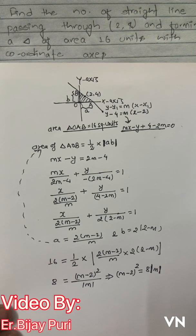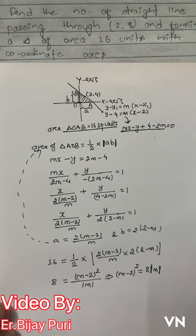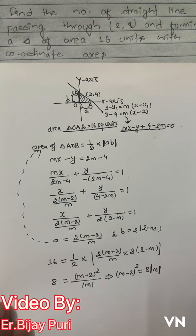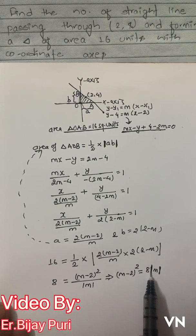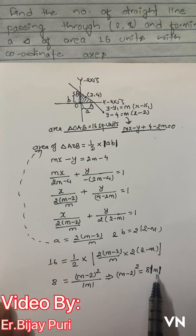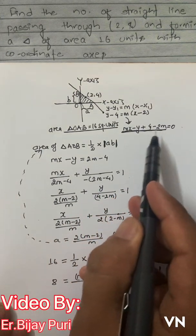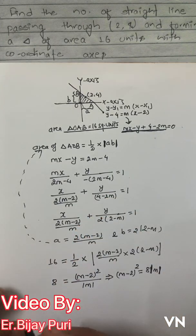If m is positive it becomes +m, and if negative the modulus makes it −m. For m = 0, tan θ = 0, meaning the line is the x-axis, which does not make an intercept — so m = 0 is excluded. Operating this function in two cases will give us the possible values of m, and from those values the number of lines can be calculated.